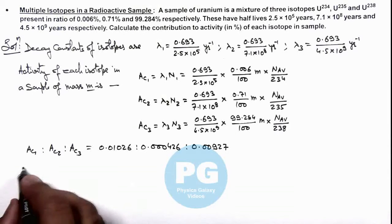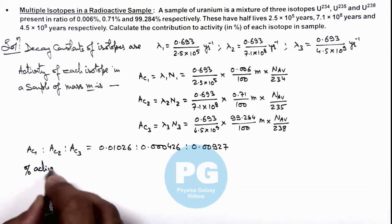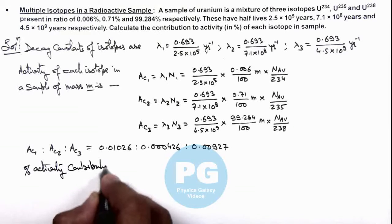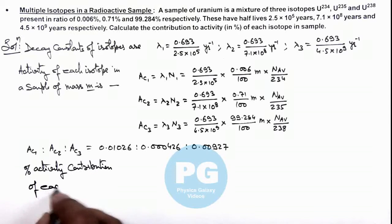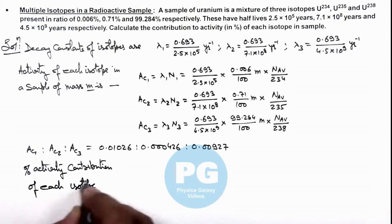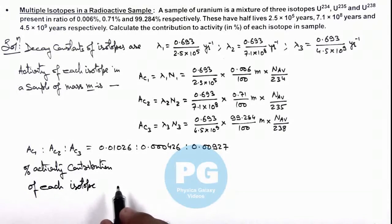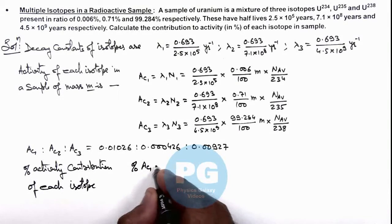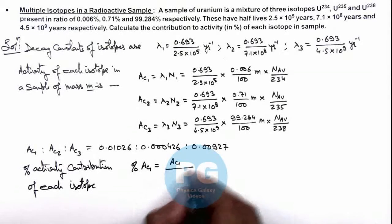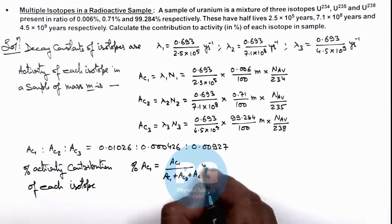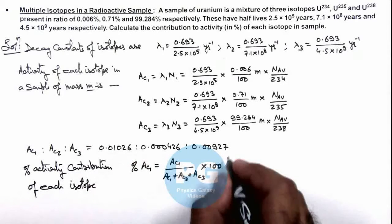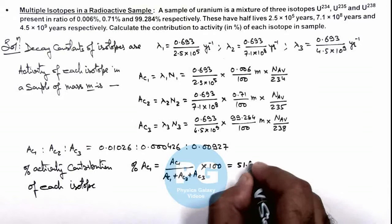Activity contribution of each isotope. As total activity will be given by the sum of the three activities, so here we can write percentage activity of first isotope is activity 1 upon activity 1 plus activity 2 plus activity 3 multiplied by hundred. If you substitute these numerical values with a constant factor, this comes out to be 51.41%.